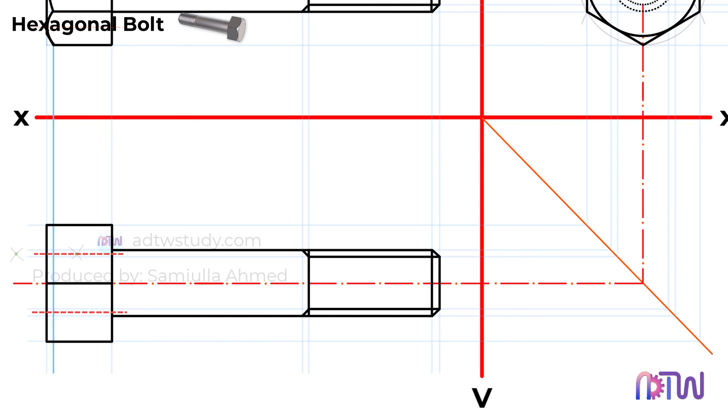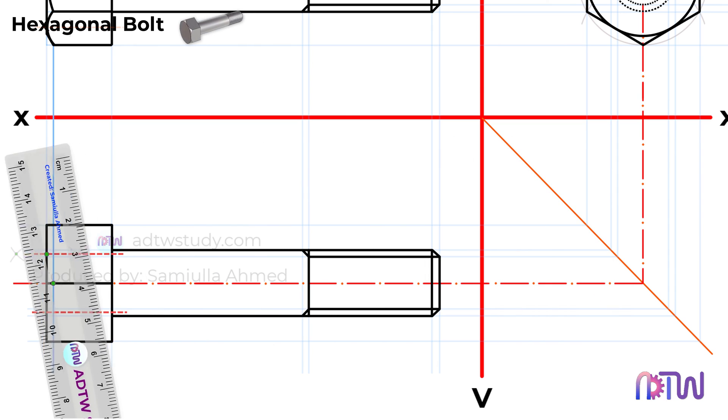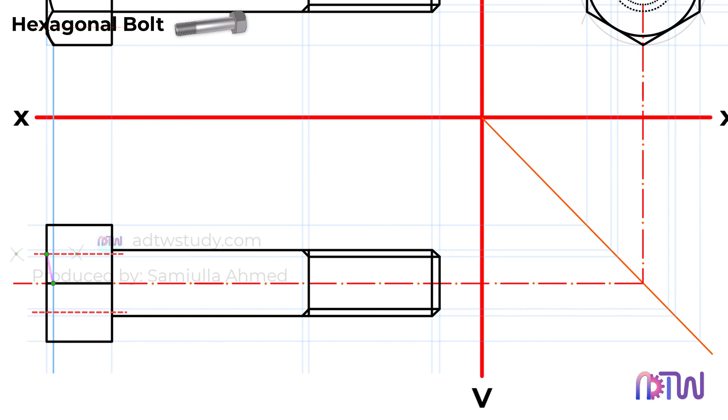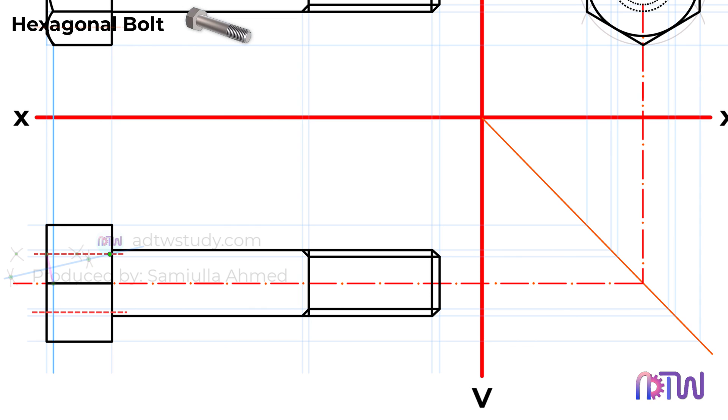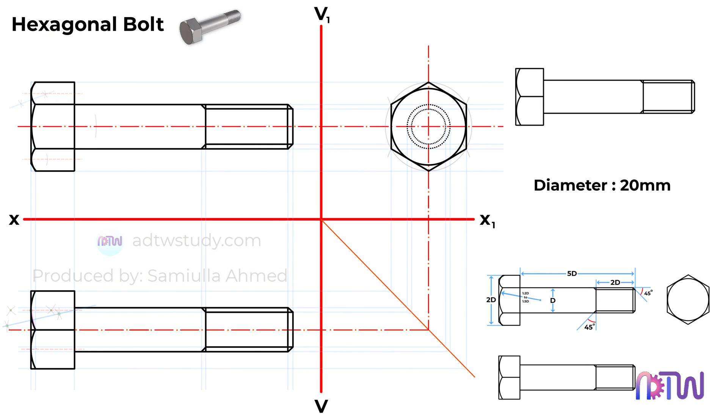Now, just as we did for the bolt head, connect these two points. Then, draw a perpendicular line passing through this line. This point serves as the center point required for the chamfer. Without altering the compass length, use this point as the center to cut the arc as shown. Now, with this point as the center, draw the chamfer. This concludes the top view of the bolt.